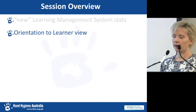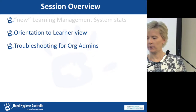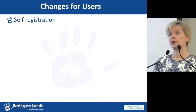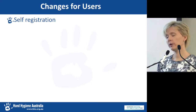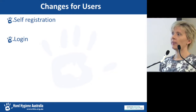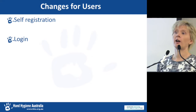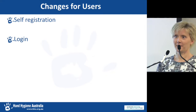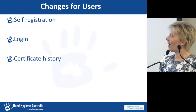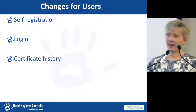Moving on to orientation for learners and troubleshooting for organisation administrators. Users need to self-register the very first time they use the system. They then generate a login to use for the life of Hand Hygiene Australia — hopefully forever. They will also be able to access their certificate history any time they need it.